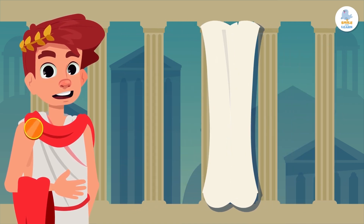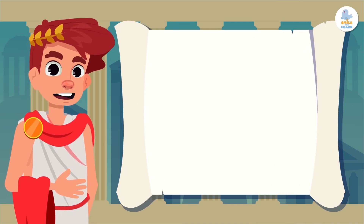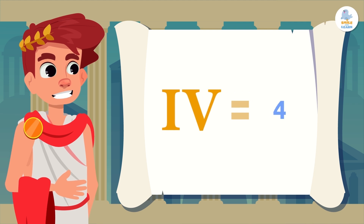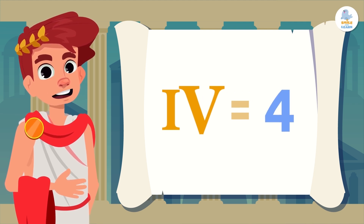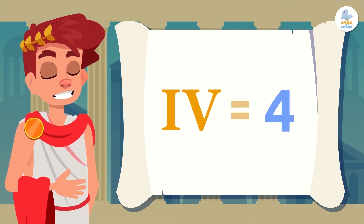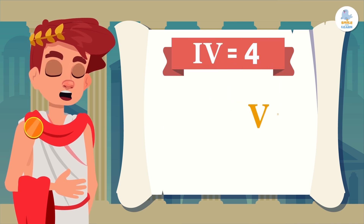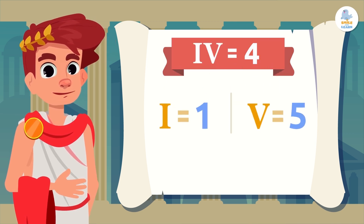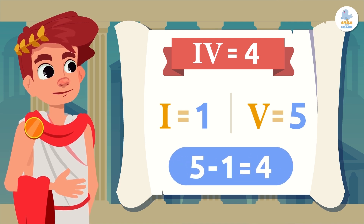Let's see an example of how subtraction works in Roman numerals. The letters I and V together represent the number 4. Since the I is to the left of the V, we subtract its value from that of the V. The value of V is 5 and the value of I is 1, so we subtract 5 minus 1 to get the number 4.